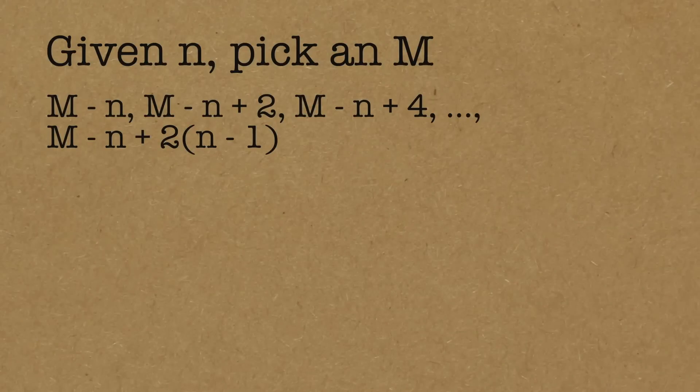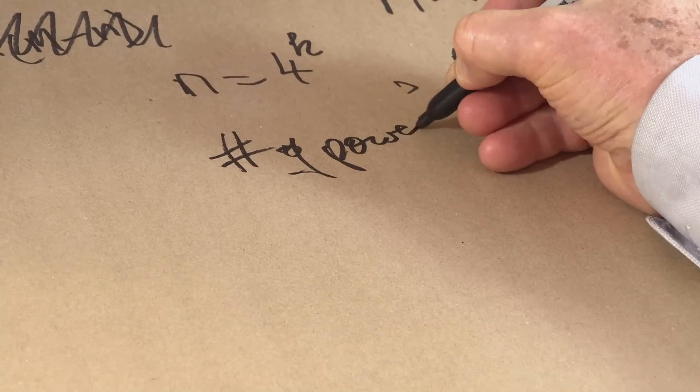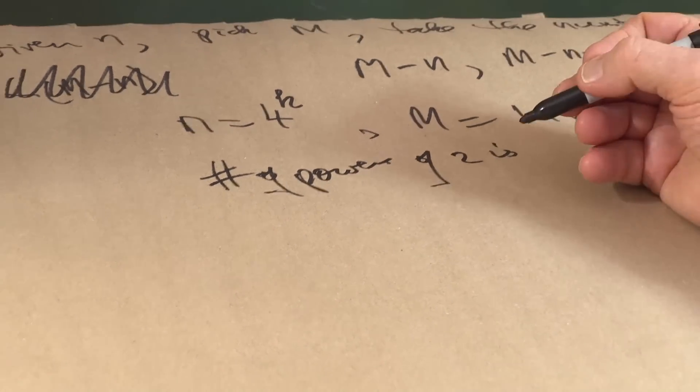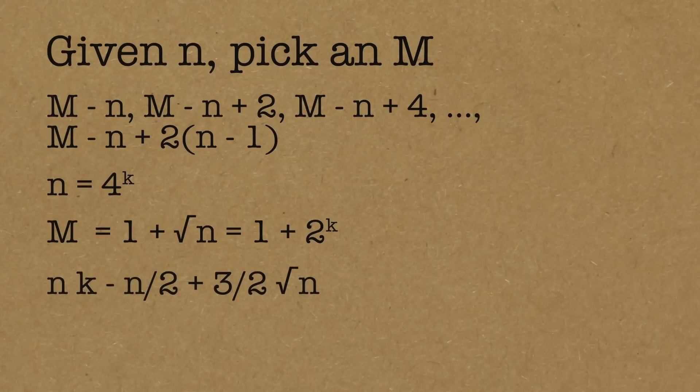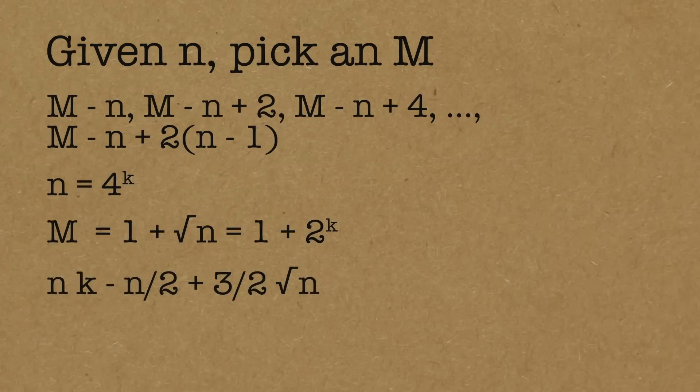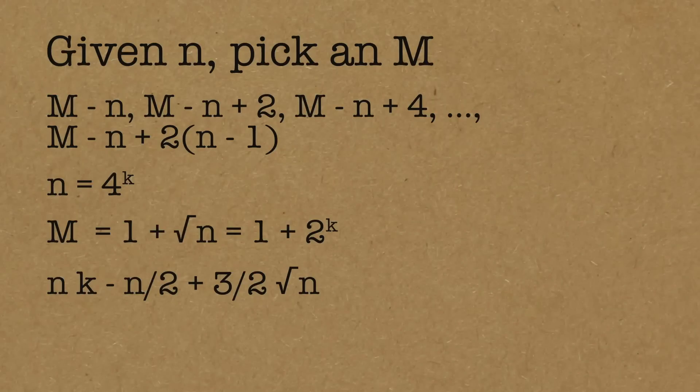Their example was if n is a power of 4, nice number, take m to be 1 plus square root of n. So 1 plus 2 to the k. And if you do that, so now we've got a concrete set of numbers, those numbers, what you get for the number of powers of 2 is n times k minus n over 2 plus 3 halves square root of n. And basically it's n times k, which is, now k is the log of n to the base 4. So it's approximately n times log of n to the base 4, n times k.